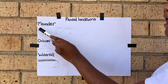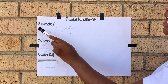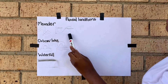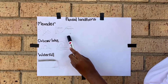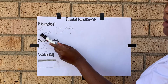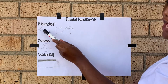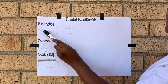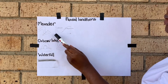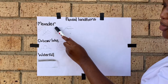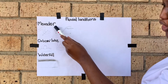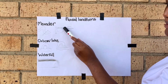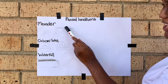Those eroded particles are deposited on the inner bend. So we can say there's erosion on the outer bend and deposition on the inner bend, as you can see in this cross-section I drew from A to B — A being the outer bend and B being the inner bend.